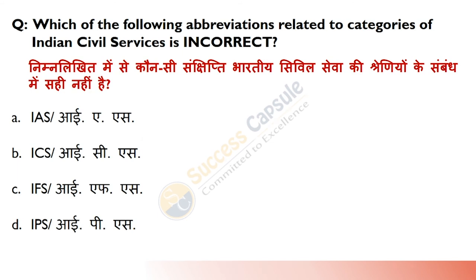Which of the following related to Indian civil services is incorrect? Answer is B — ICS. The prominent civil services are: IAS (Indian Administrative Service), IFS (Indian Forest Service), IPS (Indian Police Service), and IRS (Indian Revenue Service).